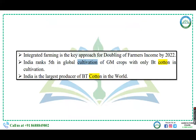Which of the following crops is the only genetically modified crop allowed for commercial cultivation? Options were potato, tobacco, jute, maize, and Bt cotton. The right answer is Bt cotton. India is ranked 15th globally in cultivation of GM crops, with only Bt cotton in cultivation, and has the largest portion of Bt cotton in the world.